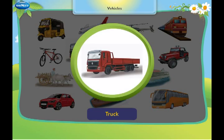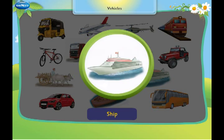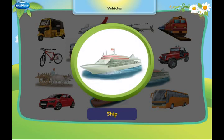This is a truck. It is used to carry heavy materials from one place to another. This is a ship. It sails in water and is used to transport people and materials.